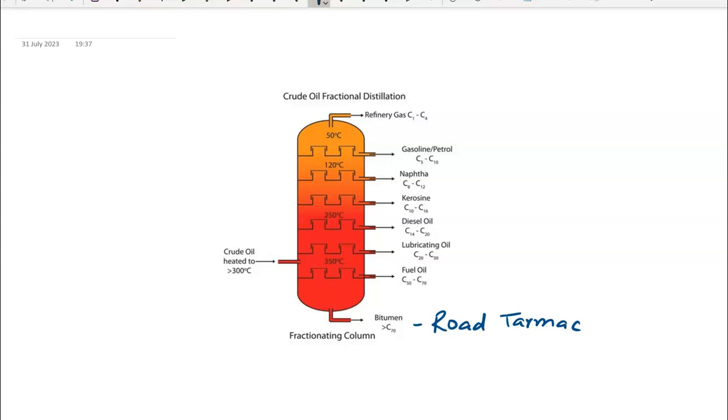You've got fuel oil which is used to fuel ships. Lubricating oil is used for lubricating machinery and objects. Diesel oil is used for lorries or some cars. Kerosene is a fuel for airplanes.